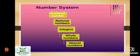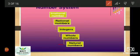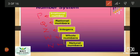Here I have mentioned 5 different types of numbers in the number system. They are natural number, whole number, integers, rational number, and irrational number. Natural numbers are represented by the symbol N, whole numbers by W, integers by Z, rational number by Q, and irrational number by P.